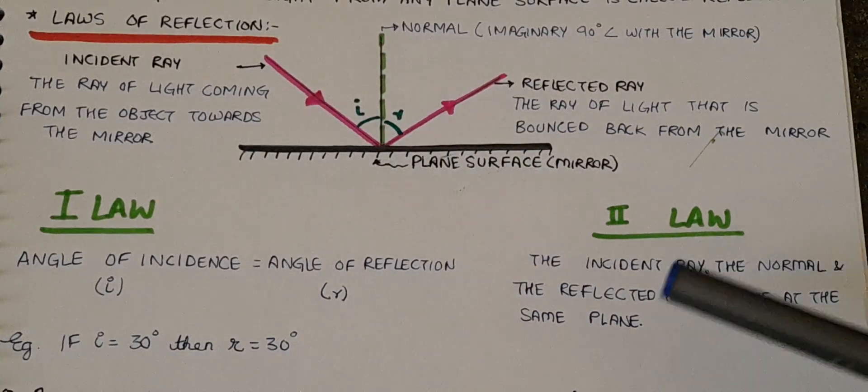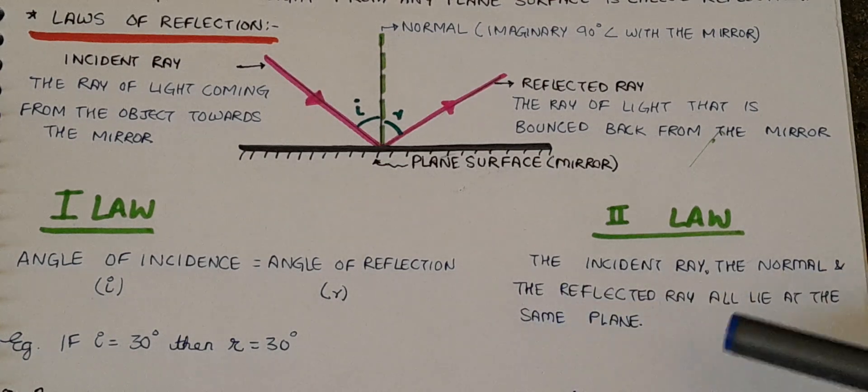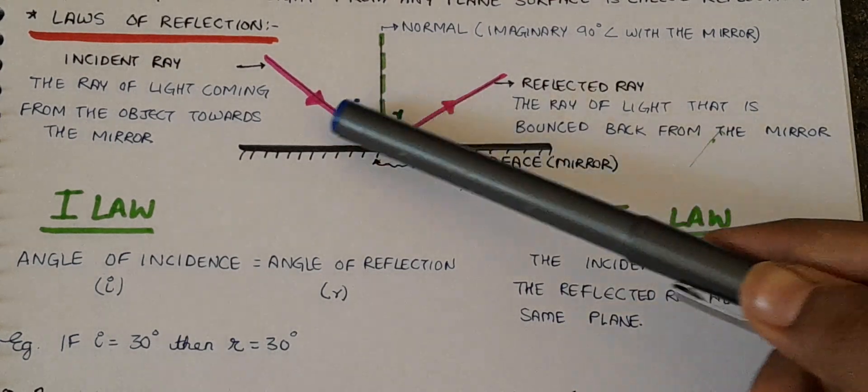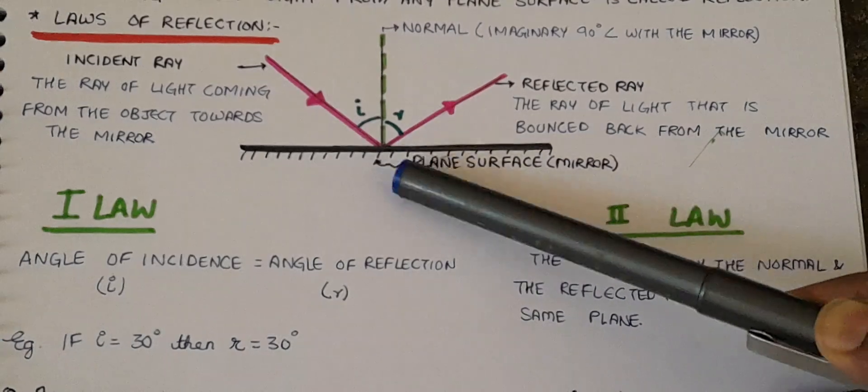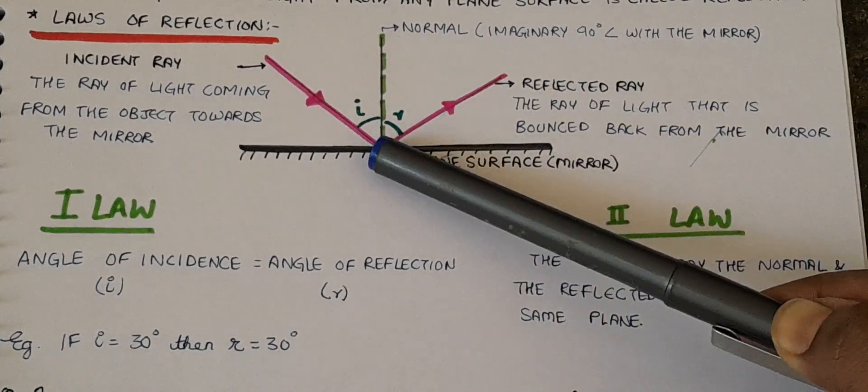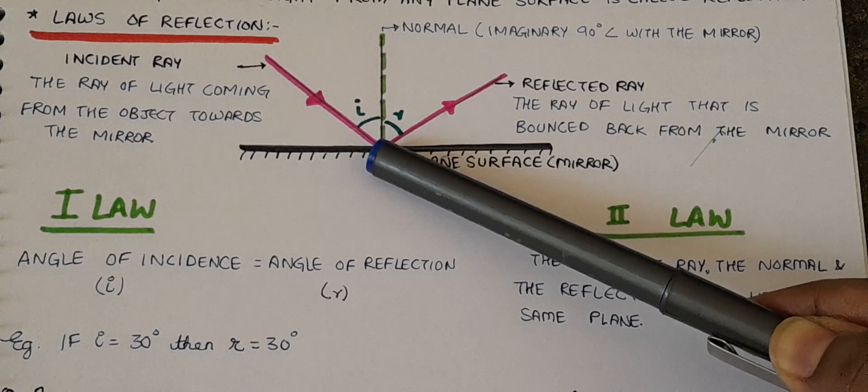Second law states that the incident ray, the normal, and the reflected ray all lie in the same plane. Jaisi ki, hum yaha pe dekh rahe hain. Incident ray, normal, aur reflected ray, teeno ek hi point pe mil rahe hain. They are all lying on the same plane.